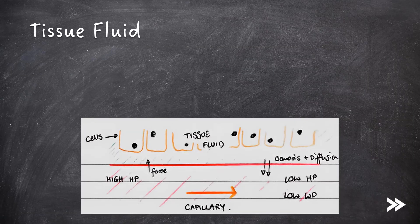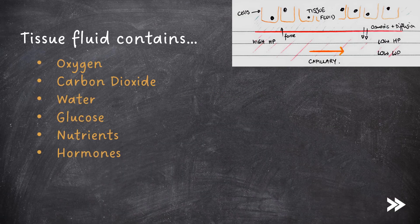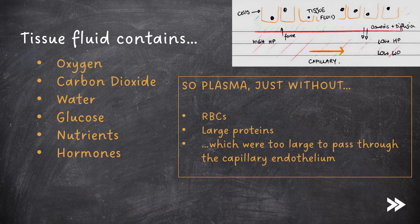Tissue fluid is the fluid that surrounds cells in tissues. In a capillary bed, substances move out of capillaries into the tissue fluid by pressure filtration. Tissue fluid contains substances such as oxygen, CO2, water, glucose, nutrients and hormones — basically the same substances as blood plasma, just without red blood cells and large proteins, which are too large to pass through the capillary endothelium and enter the tissue fluid.